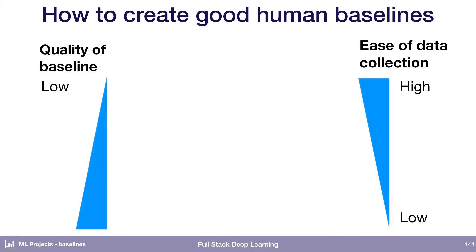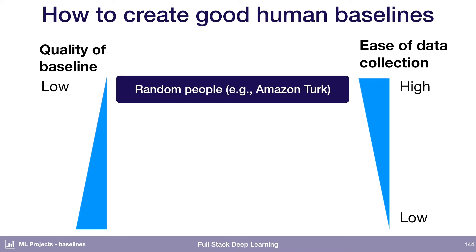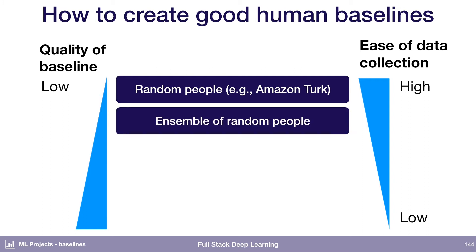So how do you actually go about measuring human performance? There's a trade-off between how easy it is to collect the data for your human performance baseline and how high quality that baseline is. The easiest thing to do is just go to random people — like Amazon Mechanical Turk or something like that. It's very available, but the data you get is generally not going to be that high quality. One thing you can do to improve quality is ensemble those random people: pick the answer that most of them agree on rather than just what one random person said.